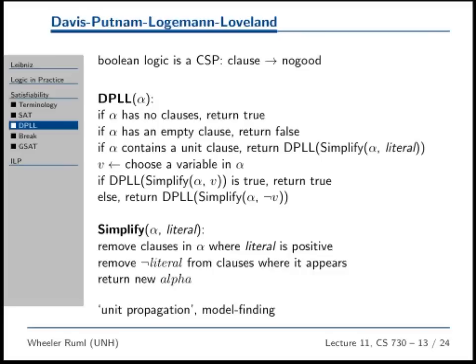That's what the DLL algorithm is—it's a depth-first search. You have your formula. If you have no clauses, then fantastic, all the clauses are true. If there's a clause that has no literals in it, then you're hosed. That means that clause can never be true, so the whole formula can't be true, since the formula is an AND of all the clauses.